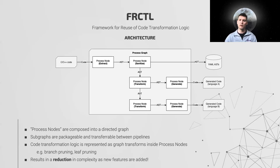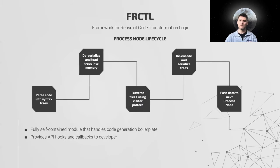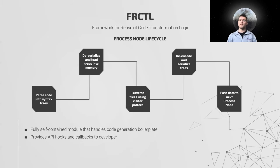As a result of this design, code transformation logic actually became simpler and more condensed as new features were added to Fractal instead of becoming more bloated and complex. So these process nodes — what are they? The entirety of the Fractal API is contained in a single process node. The developer implements custom process nodes by deriving them from a base process node class that takes care of the intensive boilerplate required for code generation. This boilerplate includes parsing code streams into serialized syntax trees, loading syntax trees into memory,